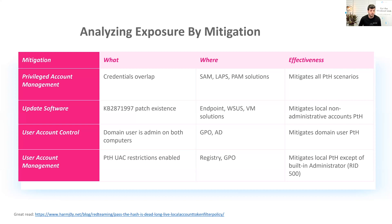Another effective mitigation commonly seen in organizations that is easy to implement is User Account Management — basically enforcing UAC restrictions using GPO. If you don't trust your GPO, you can query each endpoint's registry and look for the right keys mentioned in the MITRE ATT&CK mitigation. If your built-in administrator account is disabled, this is a very effective mitigation to eliminate the local account variation of the Pass-the-Hash attack technique.